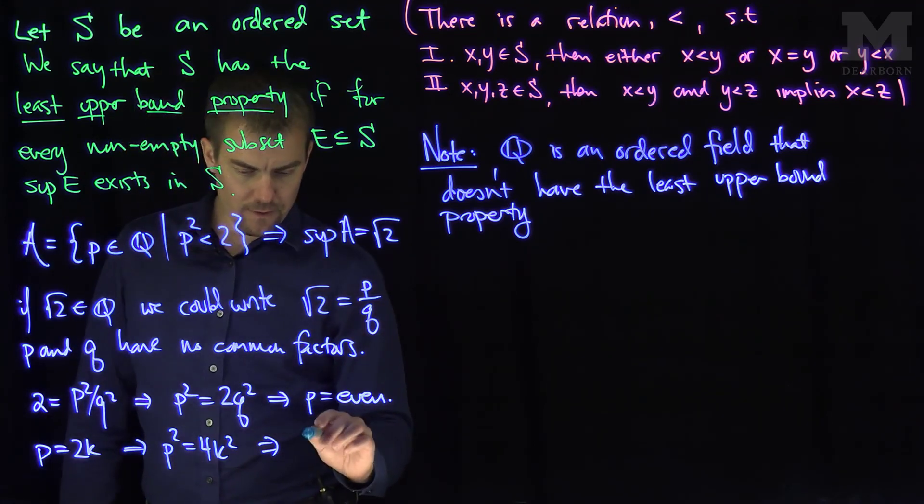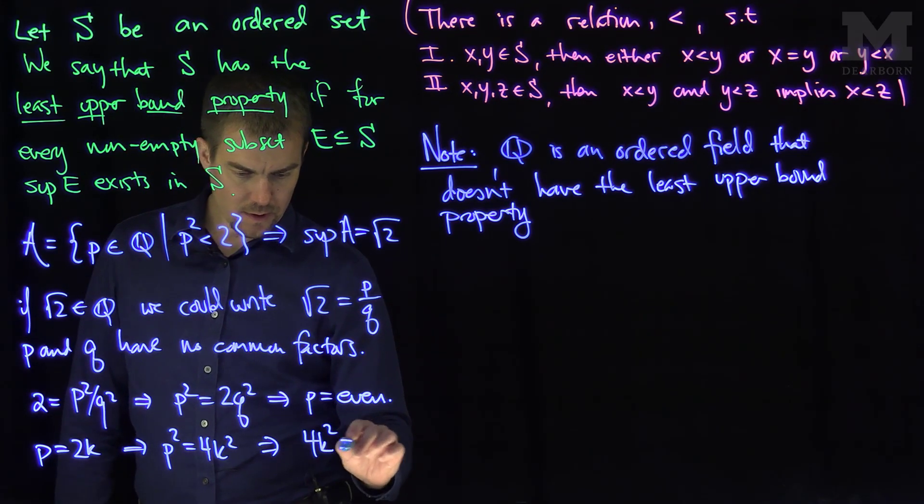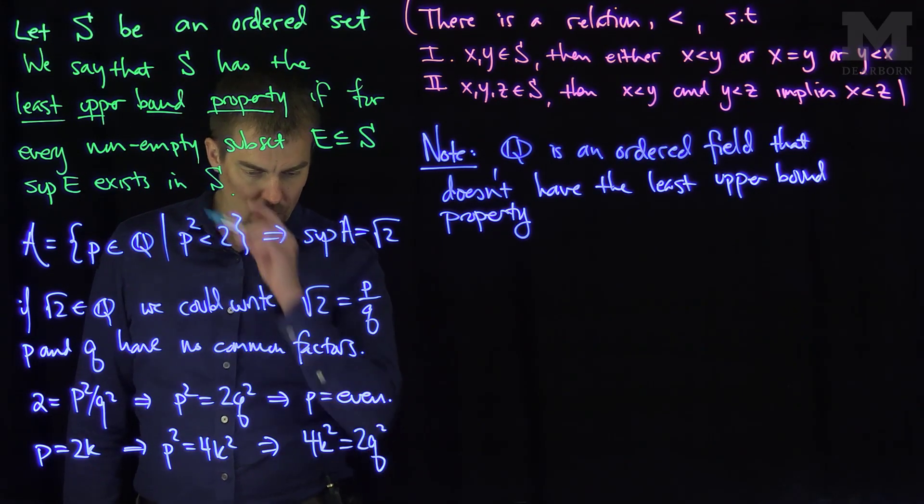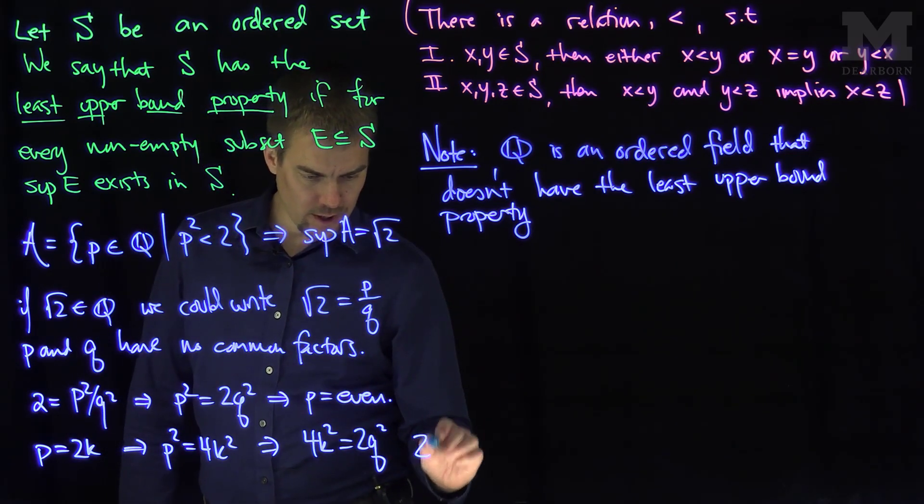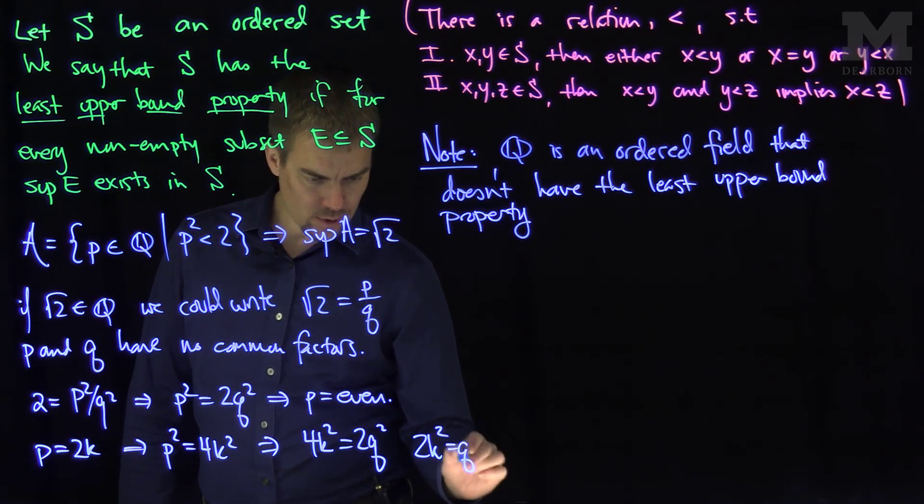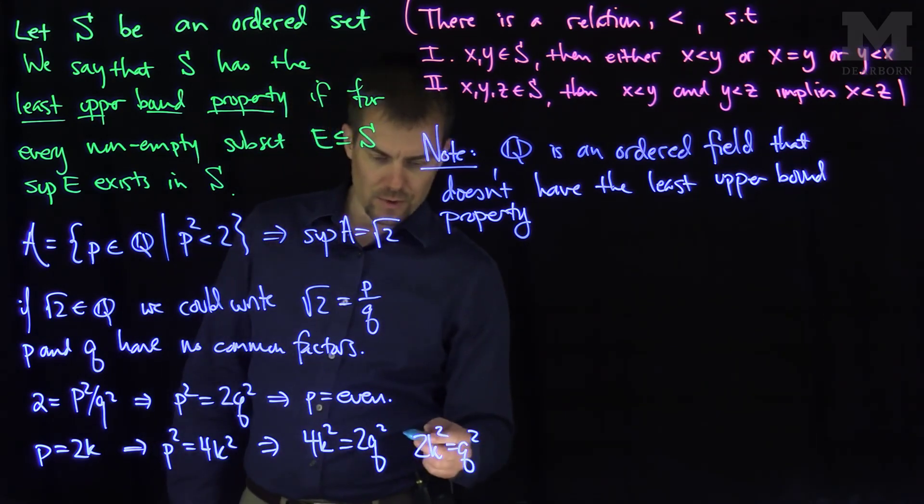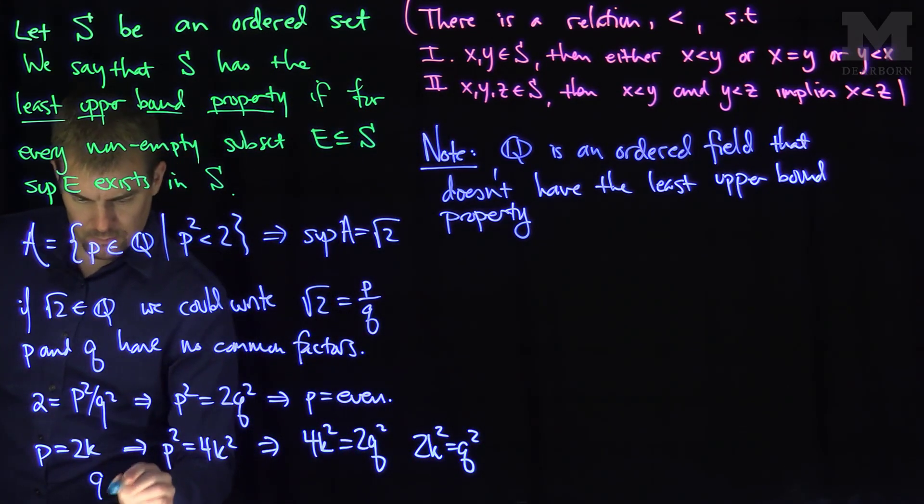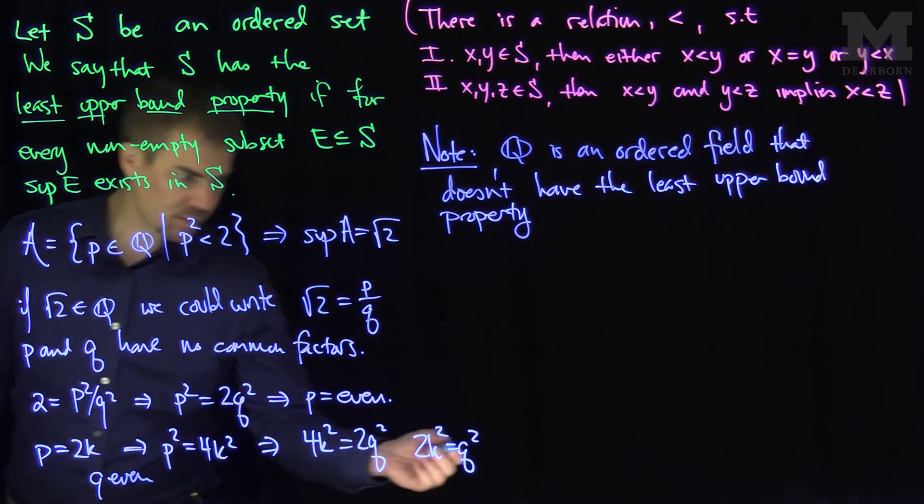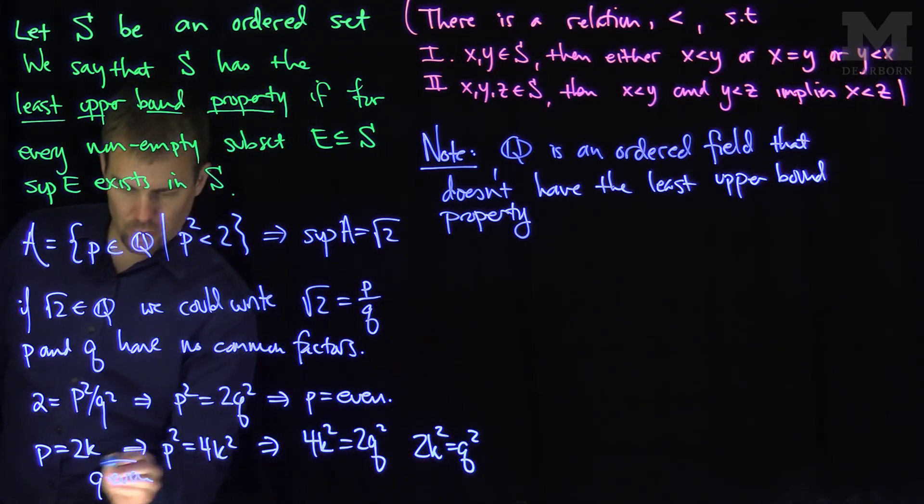Which says that p squared is 4k squared, and that tells me that 4k squared is 2q squared. Or that tells me that 2k squared is q squared. And so that tells me that q is even. This tells us that q is even, because q squared is 2 times something. So q is even.